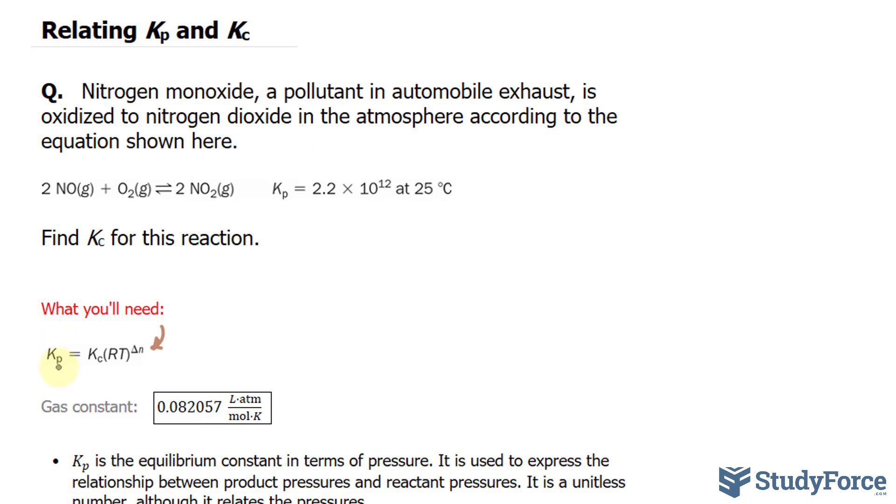We can easily substitute that into where we see Kp. We know what R is, it's a gas constant, and that's shown right here. In addition, the temperature is 25 degrees Celsius. That can take place of T, where of course we convert it to Kelvin.